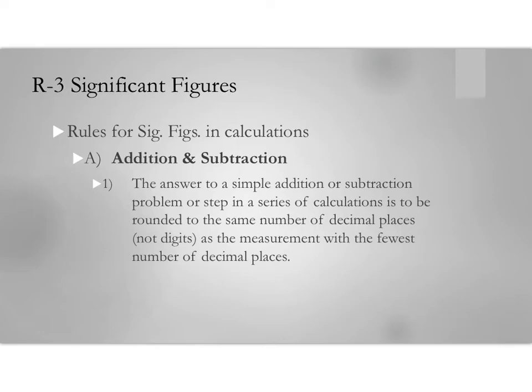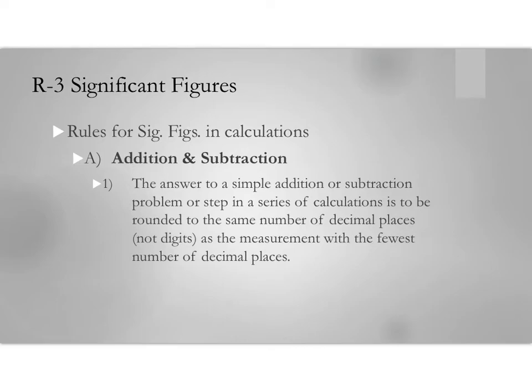Now, the rules for determining the number of significant figures after a calculation. There are multiple ways of doing calculations: addition and subtraction, multiplication and division, logarithms, exponential notation, and so on. Chemistry 110 will mostly focus on multiplication and division, but there will be some addition and subtraction — especially in this unit. Chemistry 111 incorporates logarithms and exponentiation.